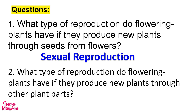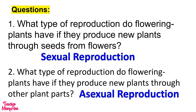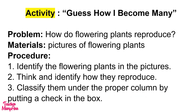What type of reproduction do flowering plants have if they produce new plants through other plant parts? That is asexual reproduction. So this time, you're going to do this activity.